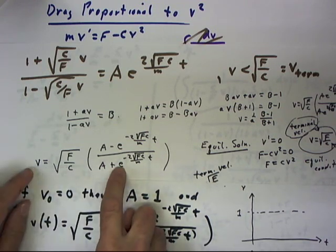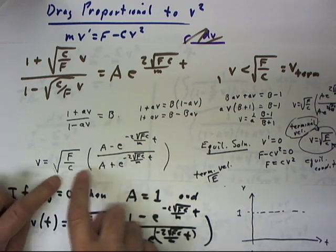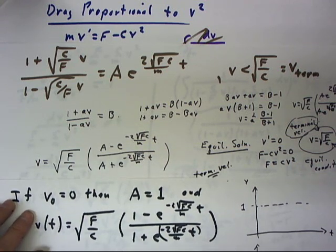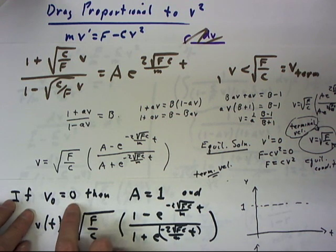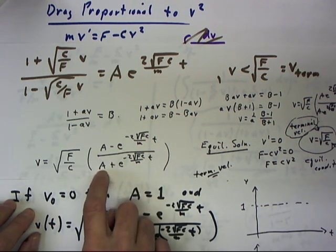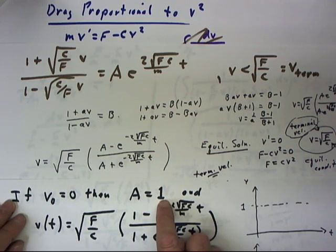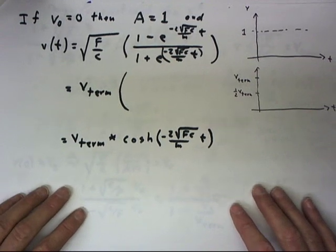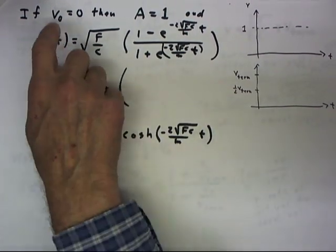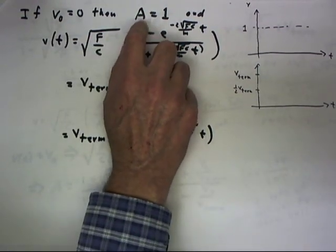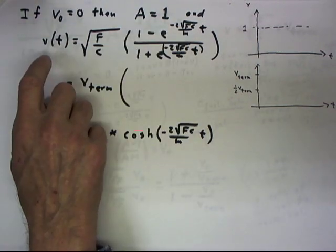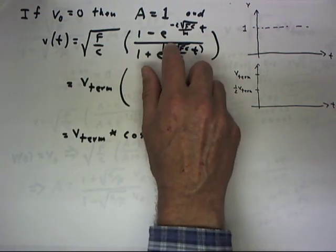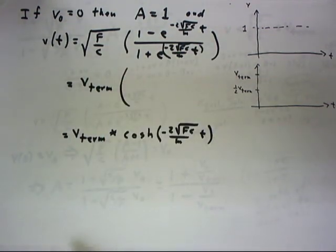That leads us to the solution for v — a solution we've already seen. If v₀ equals 0, we've determined that the constant a must equal 1. With a equal to 1, our solution can be written as the square root of f over c, times the quantity 1 minus this exponential divided by 1 plus this exponential.